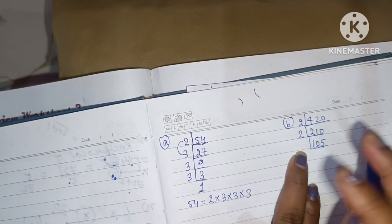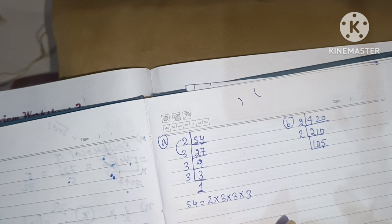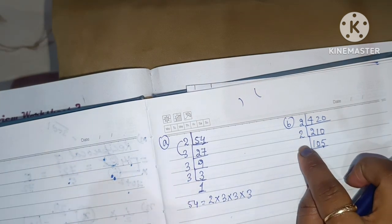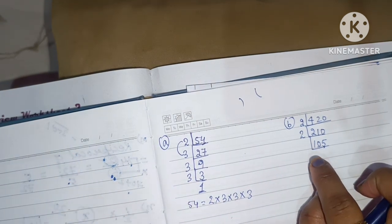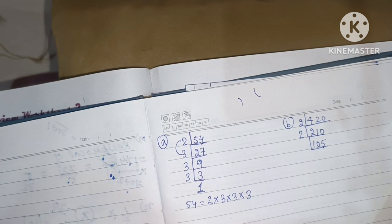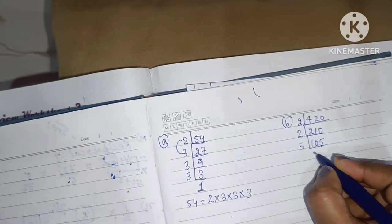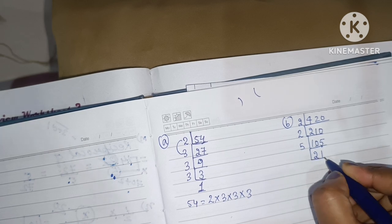But, this one is divisible by both. It's your wish, you can divide by 3 first or by 5. Whichever is easier for you. So, let's divide by 5. We will get here 21.